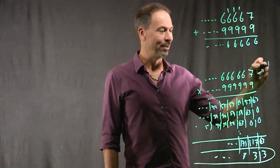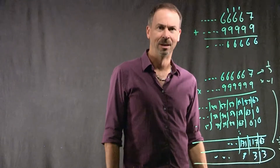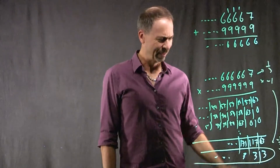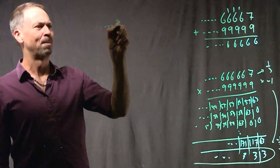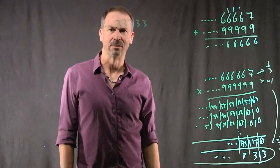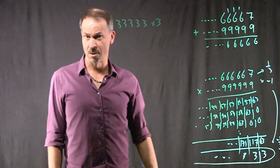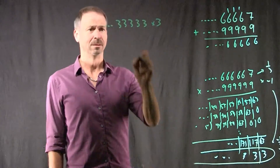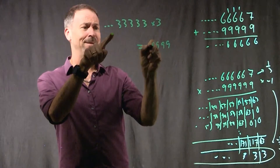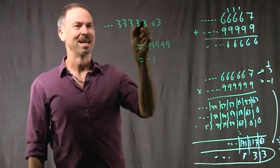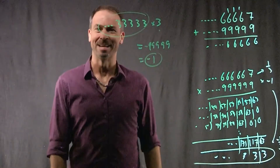1/3 times negative 1 apparently equals this — it must be negative a third. Does that seem right? Can I believe a whole bunch of threes is negative a third? Well, if I multiply it by 3, if it's negative a third, I should get the answer negative 1. Triple everything: 9, 9, 9, 9, 9, 9 — forever. Yes, it is negative 1. This thing times 3 equals negative 1. Yes, that really is negative a third.